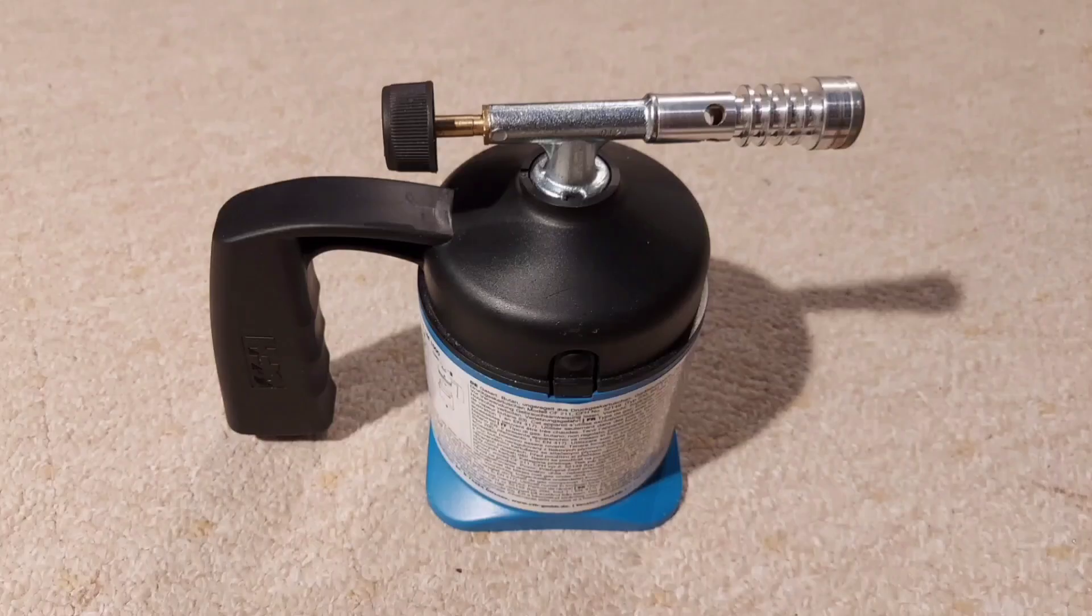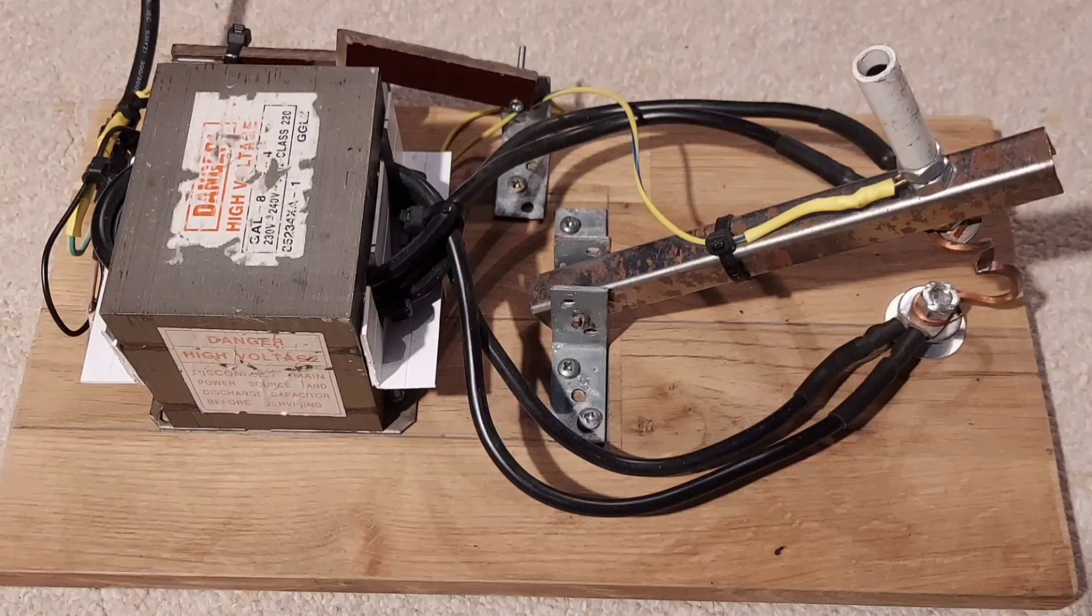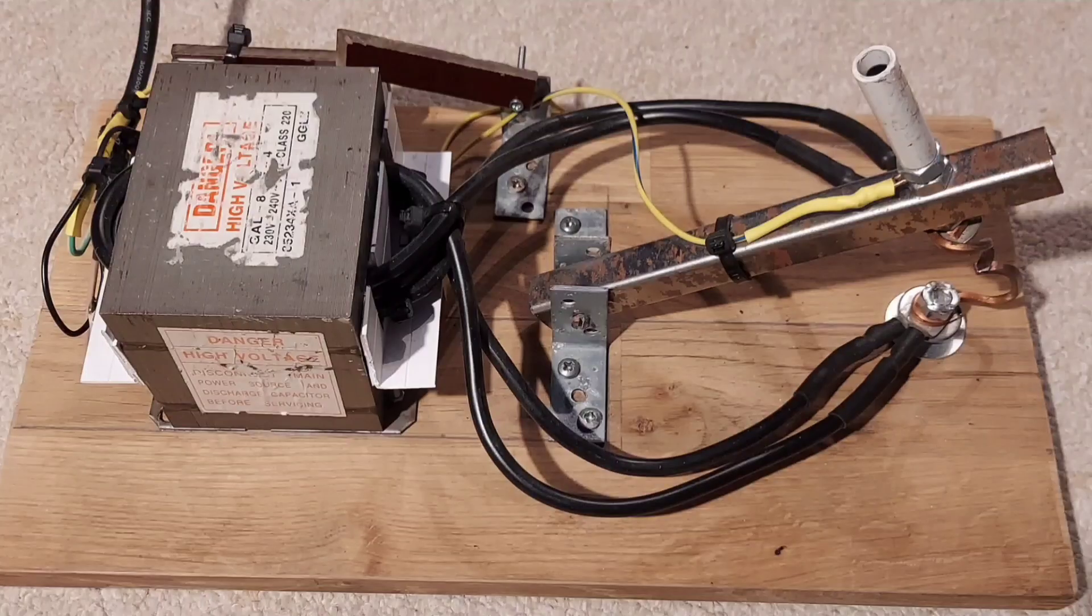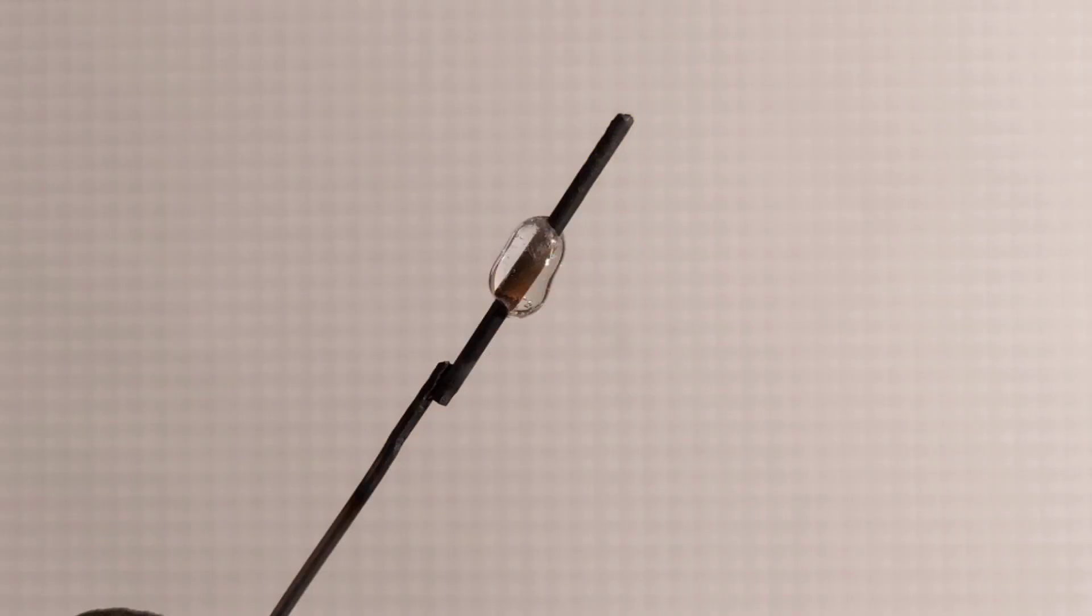And I also used a blowtorch to preheat it and a bit for annealing the parts. I also used a spot welder to connect iron wire to the tungsten.